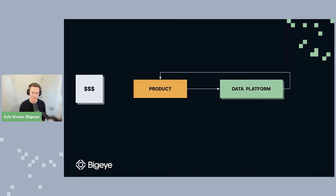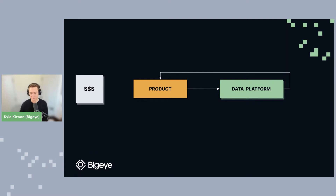This could be things like feature data - things they're going to use later for analysis to understand AB test results, or how users are interacting with the product and how they could make it better. And as they improve the product, they're going to be making changes to the way they log that data. They might be making schema changes, change what's inside a JSON blob, change event names, et cetera. But our product team is moving fast, iterating quickly and building something great for their customers.